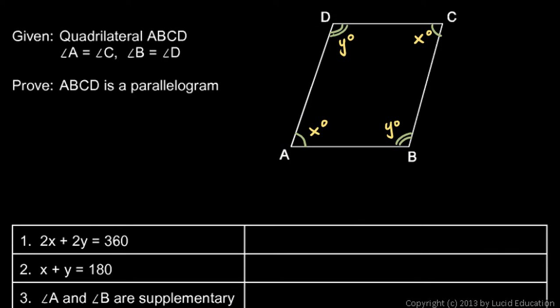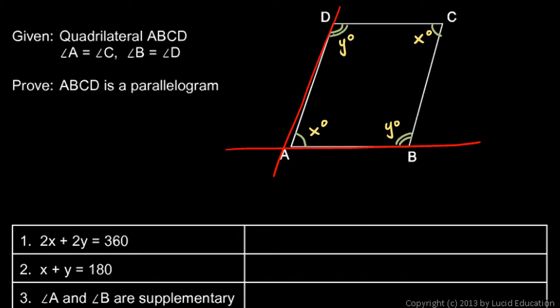Then we'll apply the same reasoning down here — we'll say that x and y have to be 180, so we'll think of this as a transversal for these two lines, and those two must be parallel by the same reasoning.